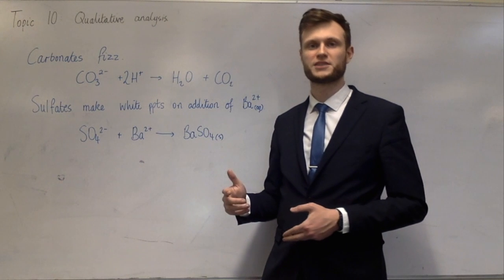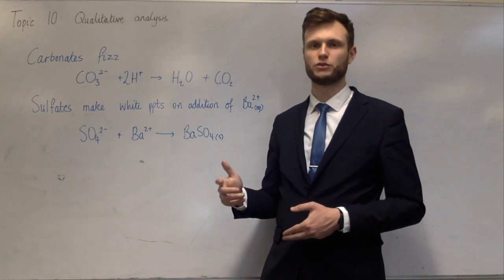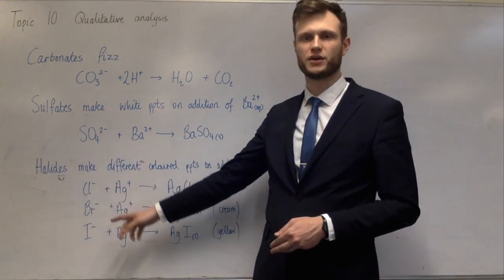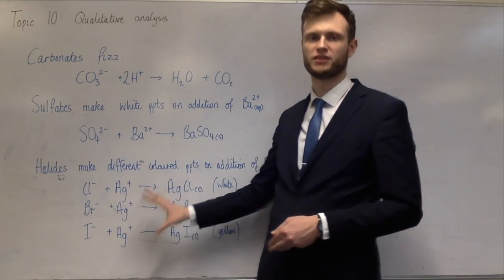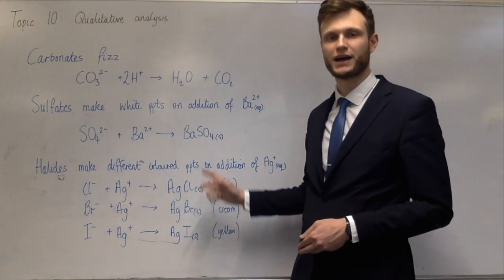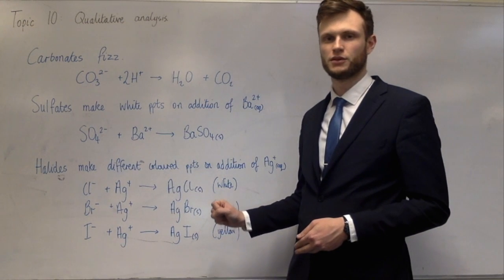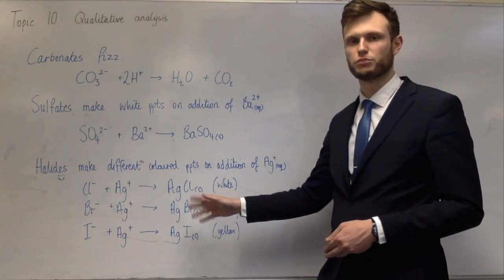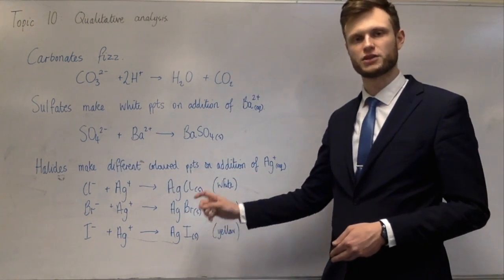They make different coloured precipitates on the addition of aqueous silver-1-plus ions. All of these aqueous halides react with silver-1-plus ions in solution to make silver halide precipitate. Silver chloride is white, silver bromide is cream, and silver iodide is yellow.